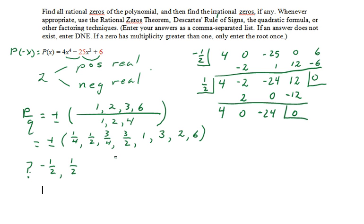So under our actual rational zeros, we have -1/2 and 1/2 already. Now we are left with a quadratic and the quadratic factor would be 4x^2 + 0x - 24. If we set that equal to 0 to find its zeros...